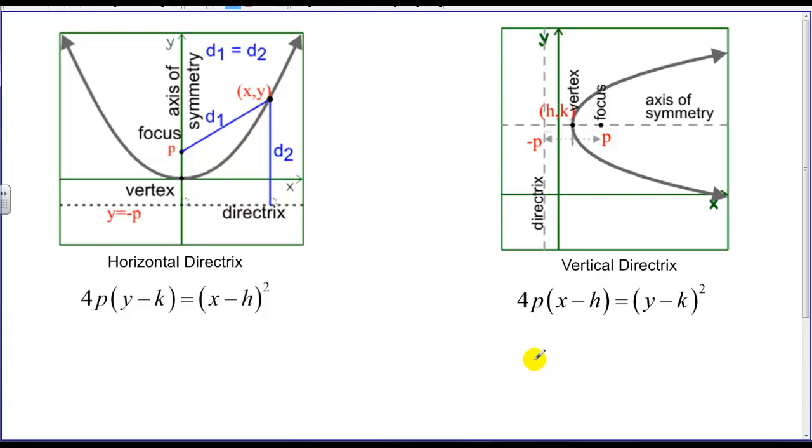Now, if I want to open to the right, in this case, my P term is positive. Left, P term negative. Up, P term positive. Down, P term negative.